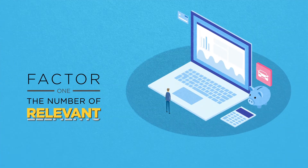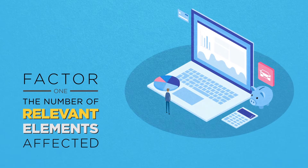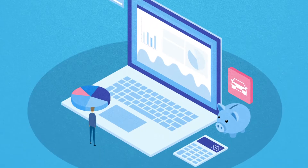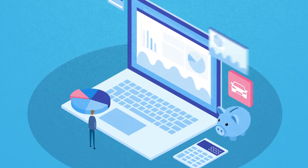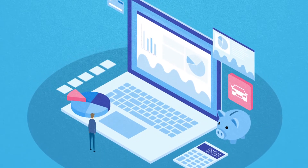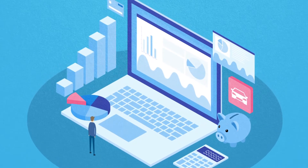The first factor is the number of relevant elements of the client's personal and financial circumstances that the financial advice may affect. CFP Board's Code and Standards provides many examples of those relevant elements. Each example focuses on what the client needs or wants.